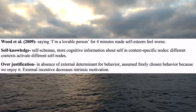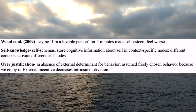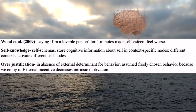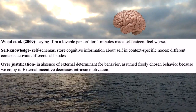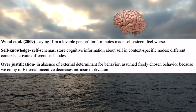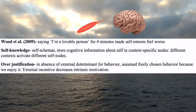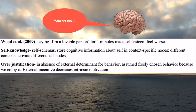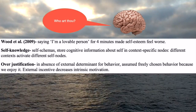Self-knowledge refers to self-schemas that store cognitive information about oneself in context-specific nodes, in which different contexts activate different self-nodes — producing different moods, different effects, different memories, and so on.